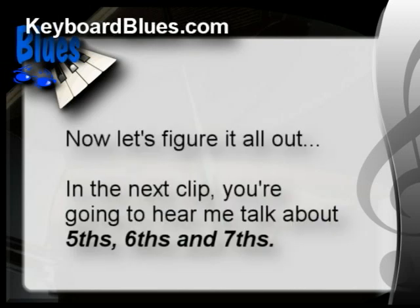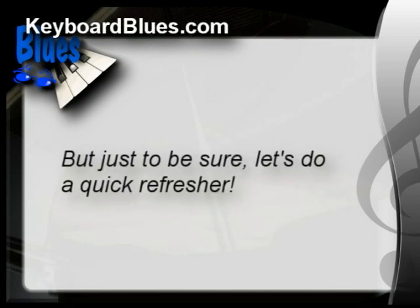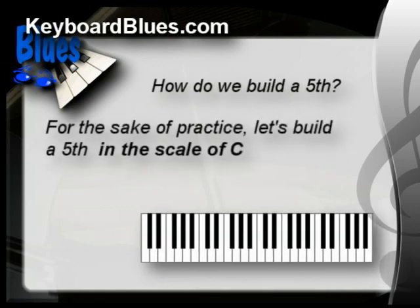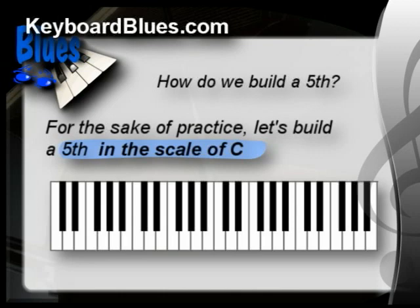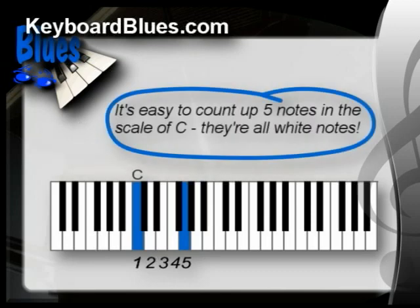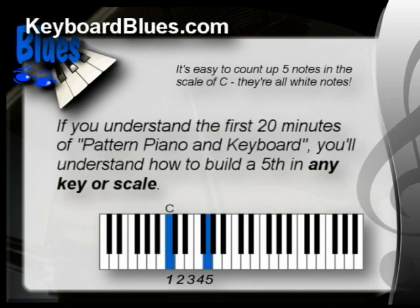In the next audio clip, you're going to hear me talk about fifths, sixths, and sevenths. If you took our original course, you already know how fifths, sixths, and sevenths are built — but just to be sure, let's do a quick refresher. To build a fifth, let's say we want to build one in the scale of C major: starting on the root, count up five notes in the scale of C. It's easy since they're all white notes. However, if you understand the first 20 minutes of our original course titled Pattern Piano, you'll understand how to build a fifth in any key or scale.